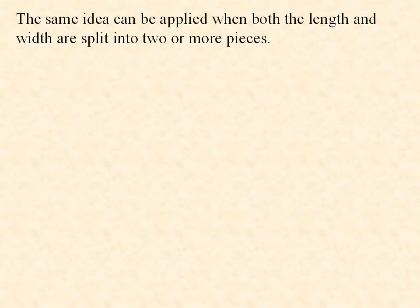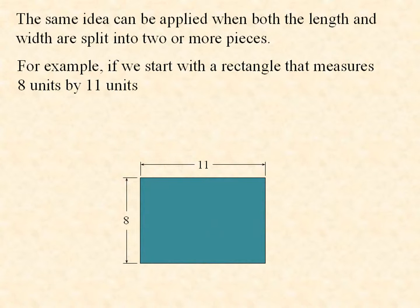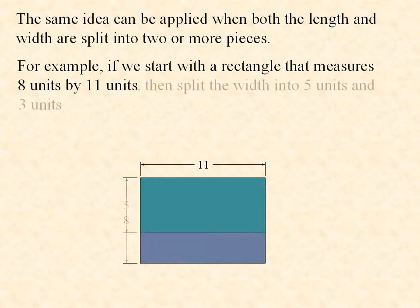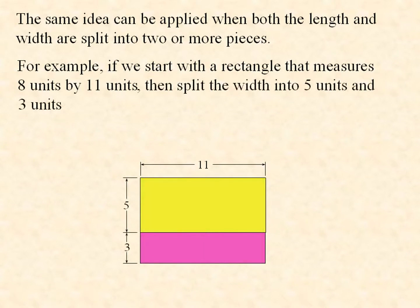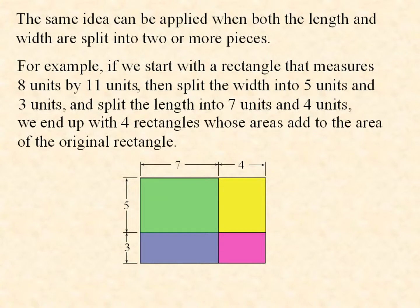The same idea can be applied when both the length and the width are split into two or more pieces. For example, if we start with a rectangle that measures 8 units by 11 units, then split the width into 5 units and 3 units, and split the length into 7 units and 4 units, we end up with four rectangles whose areas add to the area of the original rectangle.